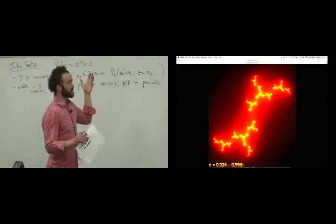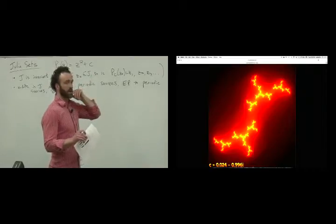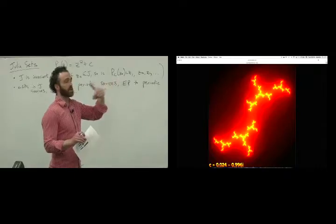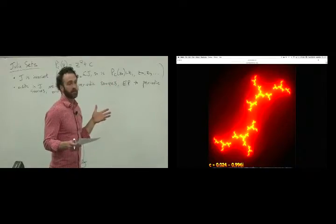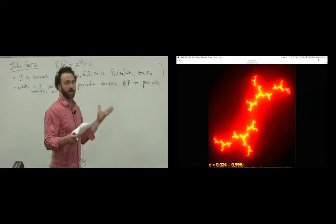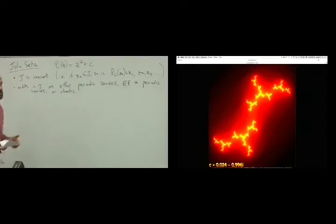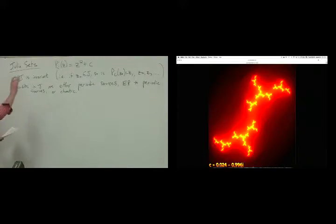If there is a sink, remember the origin has to go to it — the origin is the only critical point. In the event that you take the origin and map it and it doesn't go to a sink, maybe it goes to infinity, maybe it goes to J. That tells you something about whether the sink exists. The Mandelbrot set is going to be a distillation of what the origin does for all of these different C values.